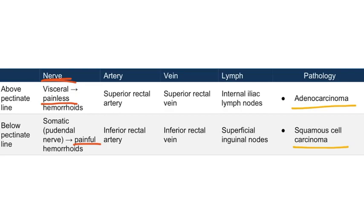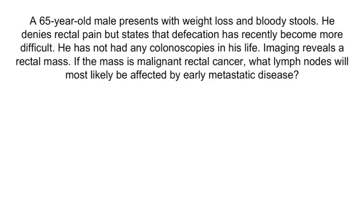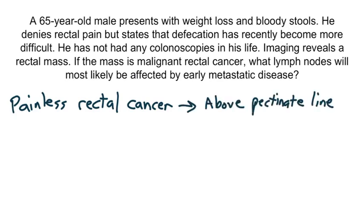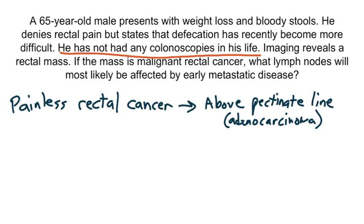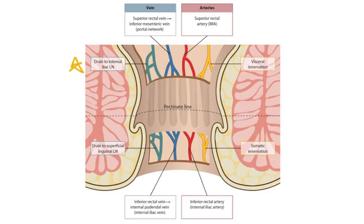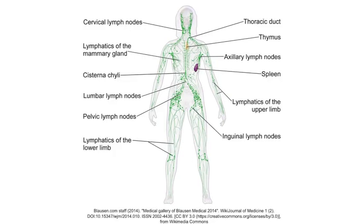Let's do one final question. A 65-year-old male presents with weight loss and bloody stools. He denies rectal pain but states defecation has become more difficult. He has not had any colonoscopies. Imaging reveals a rectal mass. If the mass is malignant rectal cancer, what lymph nodes will most likely be affected by early metastatic disease? The cancer has not produced pain, making cancer above the pectinate line — adenocarcinoma — more likely. Lymph above the pectinate line drains to the internal iliac nodes, which are located within the pelvic lymph node system. That concludes this section.